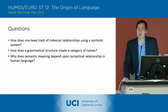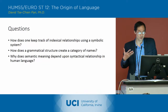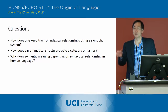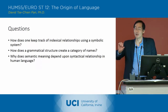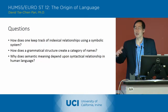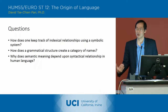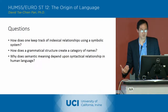So that's the first question. You keep track of indexical relationships using a symbolic system by keeping track of the sign-to-sign relationships that are possible and impossible. And by doing that, you understand the way the object relationships are matching up as well.